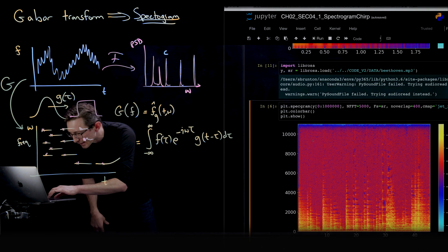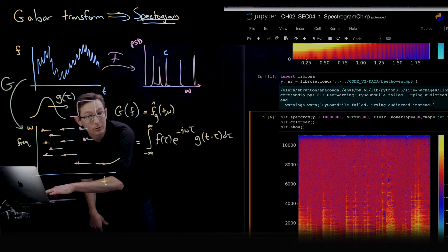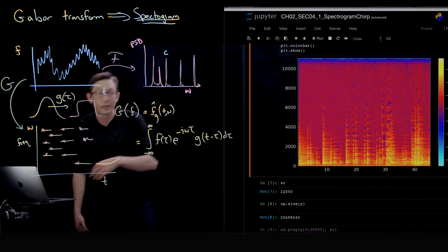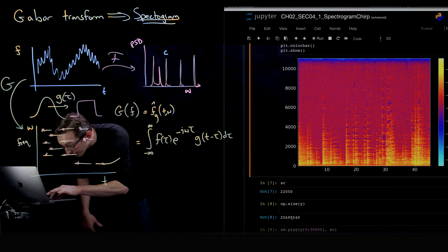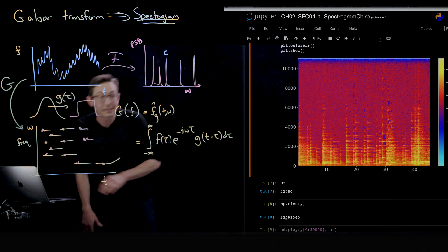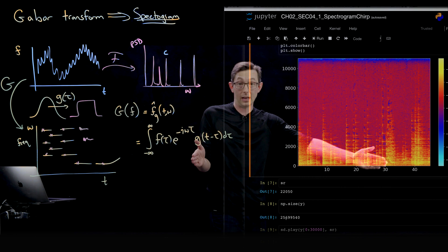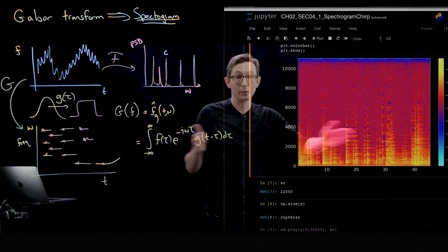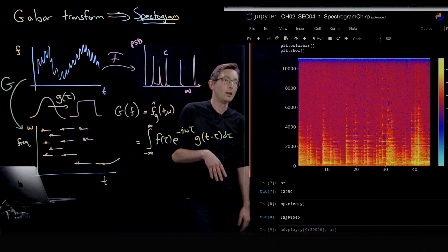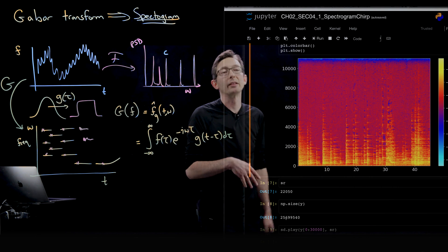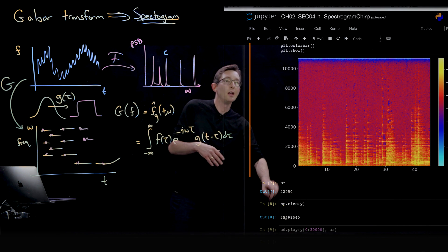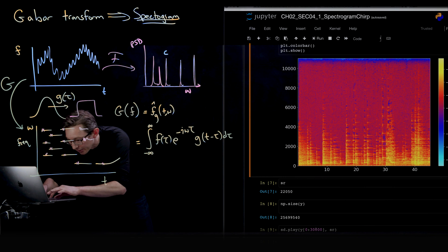And if you look at this LibRosa, it doesn't only give you the signal Y, it also gives you the sampling rate. So the sampling rate is 22,000 or 22 kilohertz. The size of this data is about 26 million entries. So that tells you that this is a really long song. This is like maybe eight minutes or something like that. I'm not sure I did that math right. Maybe it's more like 20 minutes.